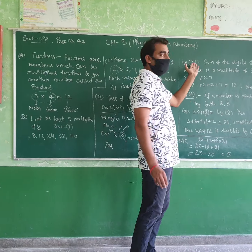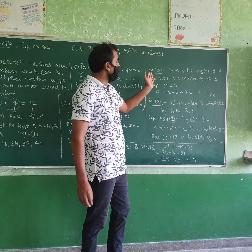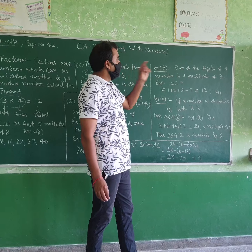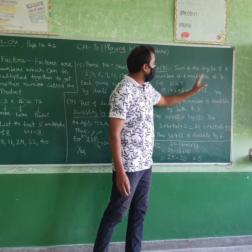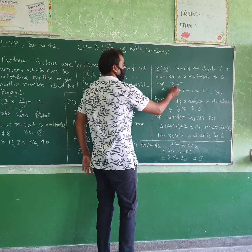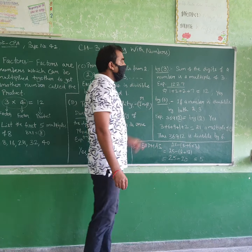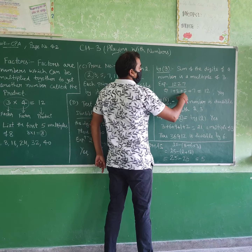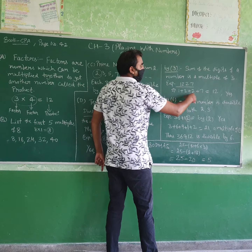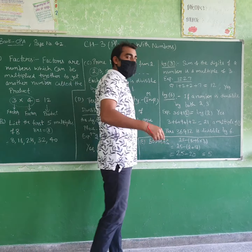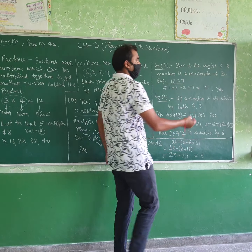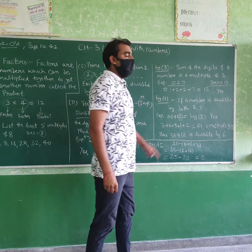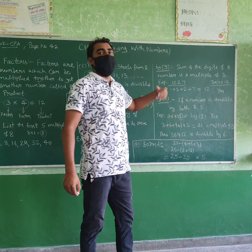Now divisibility by 3. We check if the sum of all the digits of a number is a multiple of 3. For example, take the number 1227. The sum of its digits: 1 plus 2 plus 2 plus 7 equals 12. Since 12 is a multiple of 3 — because 3 times 4 equals 12 — then 1227 is divisible by 3.